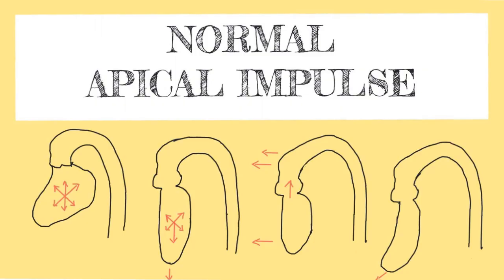Today we'll be dealing with apical impulse and more importantly, a normal apical impulse. We tend to ignore palpation, which is a very important concept of clinical examination. There are different types of apical impulse encountered in disease states like hyperkinetic and sustained type of apex, but before we go into those details, it is really important to understand what causes a normal apical impulse.